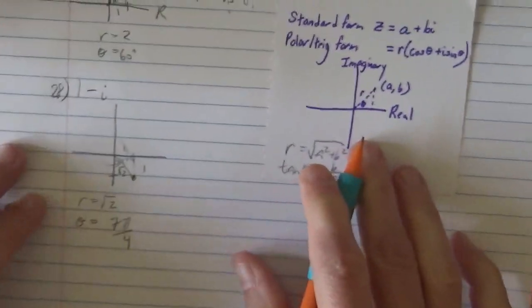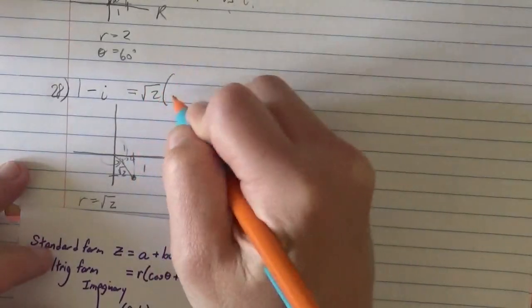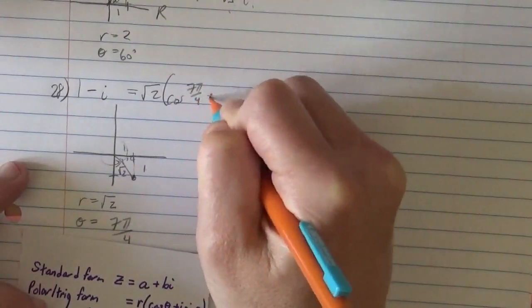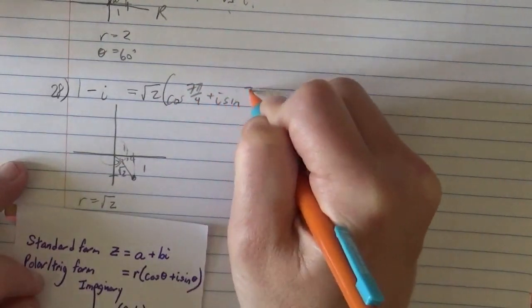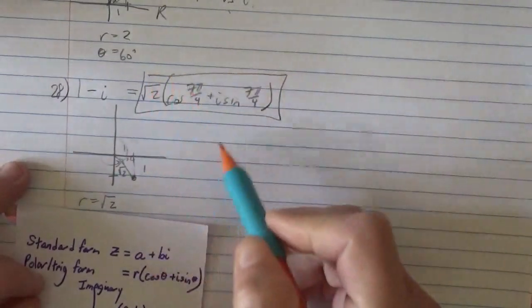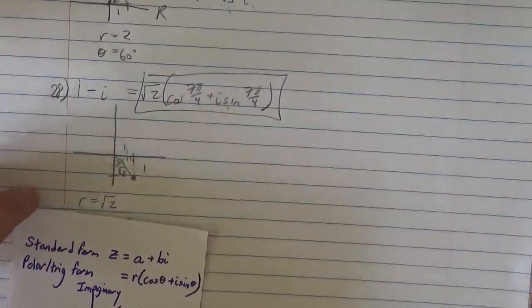So if we choose to, we can write this as r cosine theta plus i sine theta. So root 2 times the cosine of 7 pi fourths plus i times the sine of 7 pi fourths. And that is our polar form. I encourage you to do that. Make sure you get back to there.